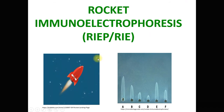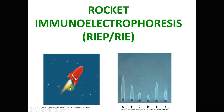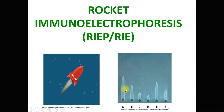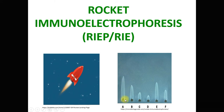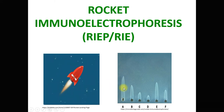In this slide you can see there is a rocket flashing high in the sky. On the other side, there are white colored bands which have the shape of the rocket tail. Because of the similarity in these two shapes, this technique is called rocket electrophoresis.